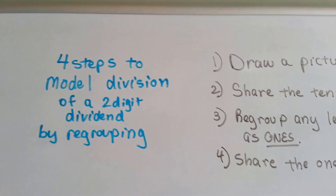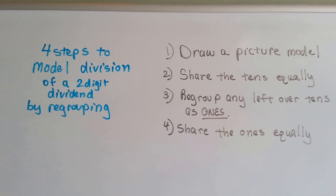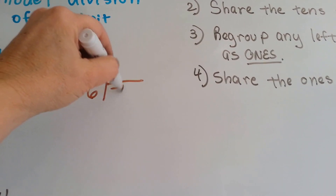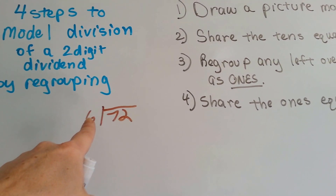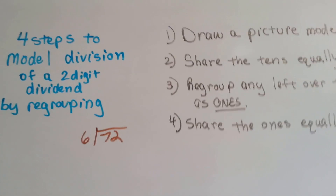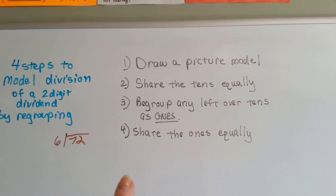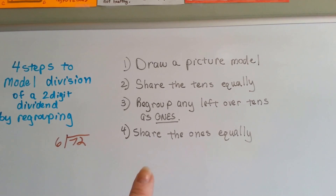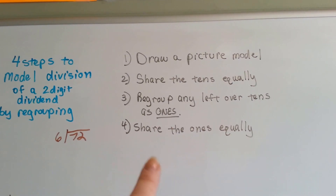We have four steps to model division of a two-digit dividend by regrouping. First, we draw a picture for the model. Second, we share the tens equally. Third, we regroup any leftover tens into ones. And fourth, we share the ones equally.